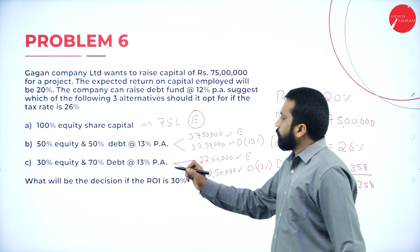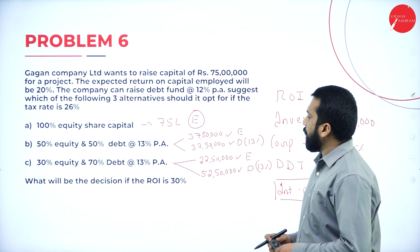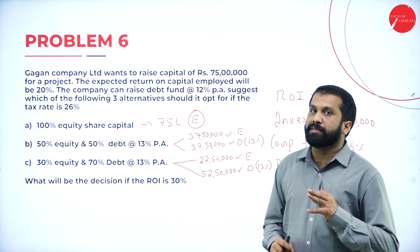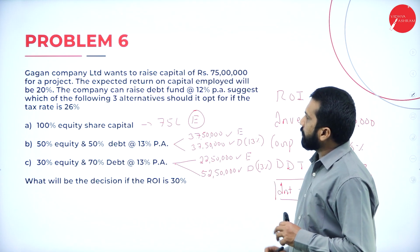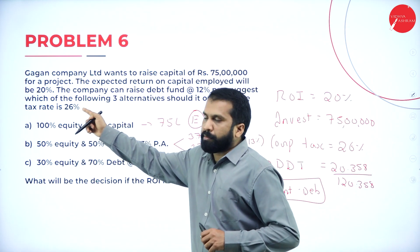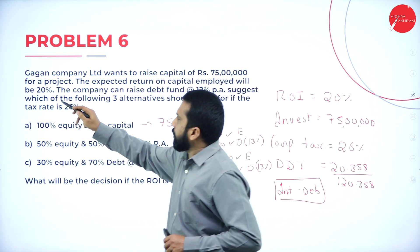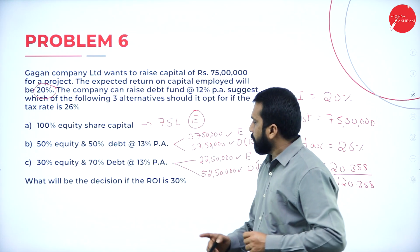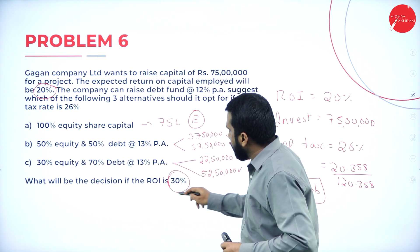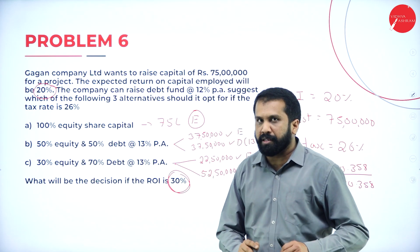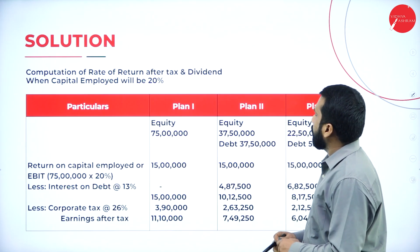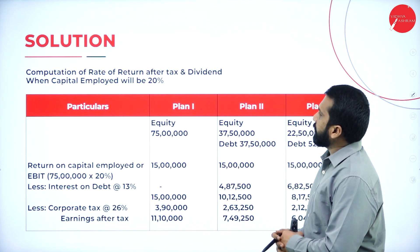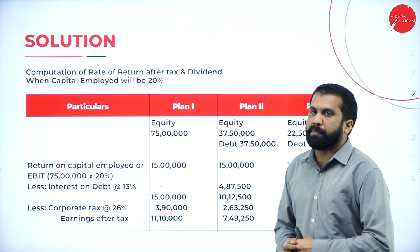Now, what will be the decision if the ROI is 30%? Return on investment is 30% — we will calculate that separately. First, this is problem number one for 20%, and you are supposed to do one more problem for 30%. Now, the combination of rate of return after tax and dividend when the capital employed will be 20%.